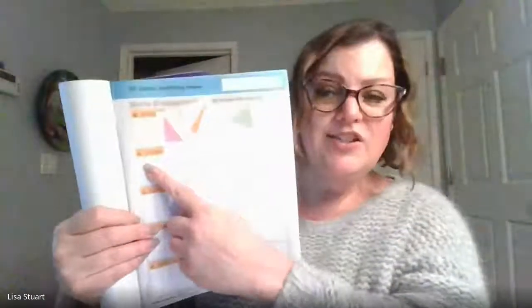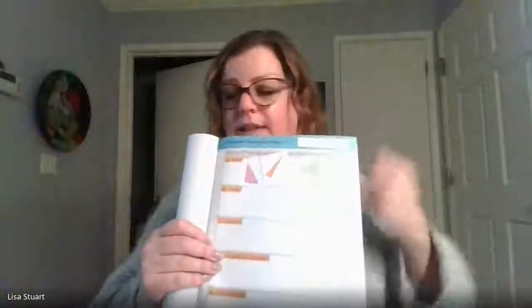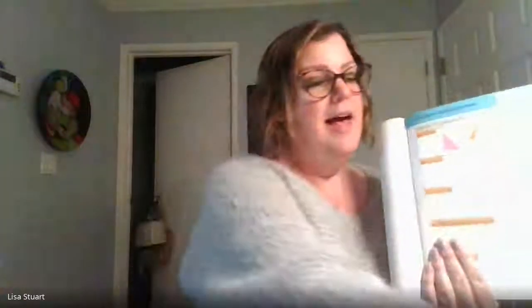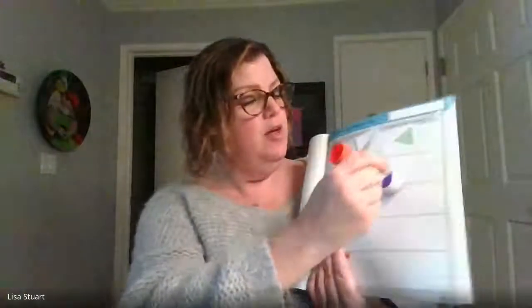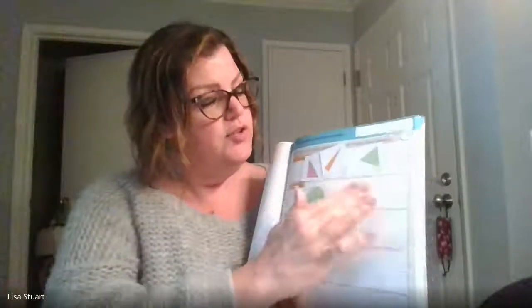Our next group is circles. I know a circle has one round line all the way around. I'm going to get some more glue and put it on my workbook page. I see a large green circle and I see a small pink circle. I have two circles in my circle group.